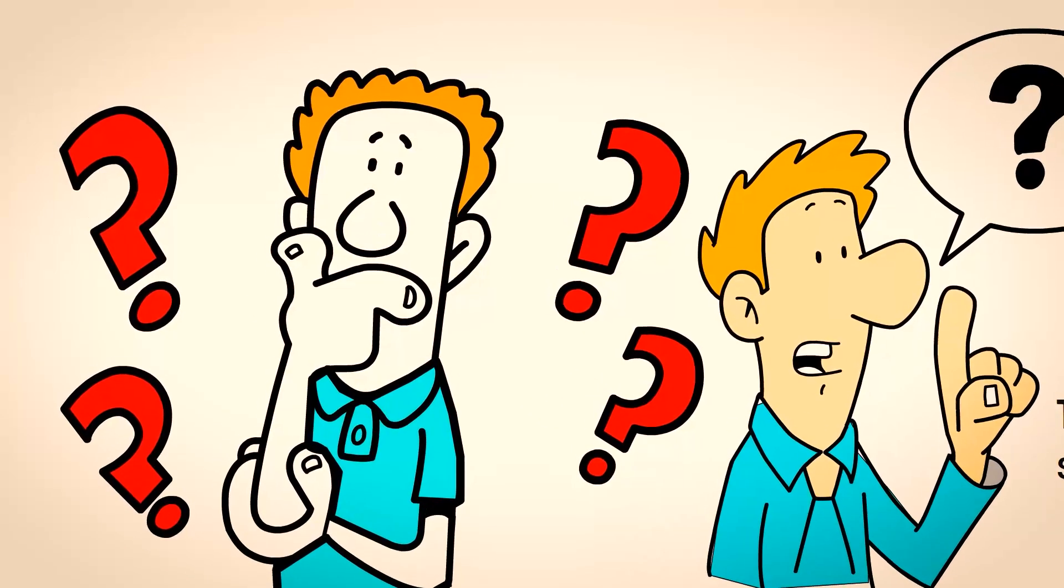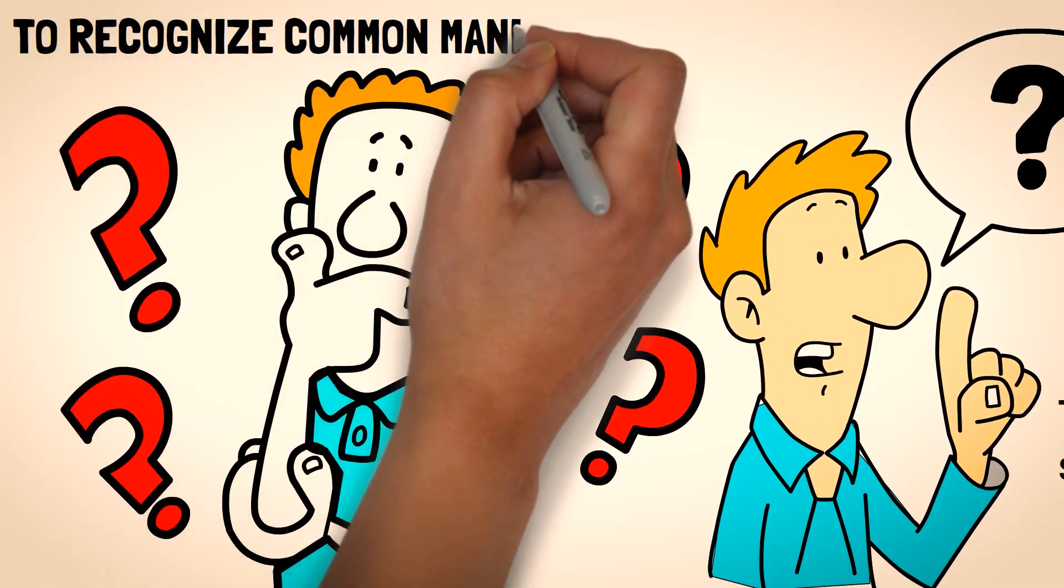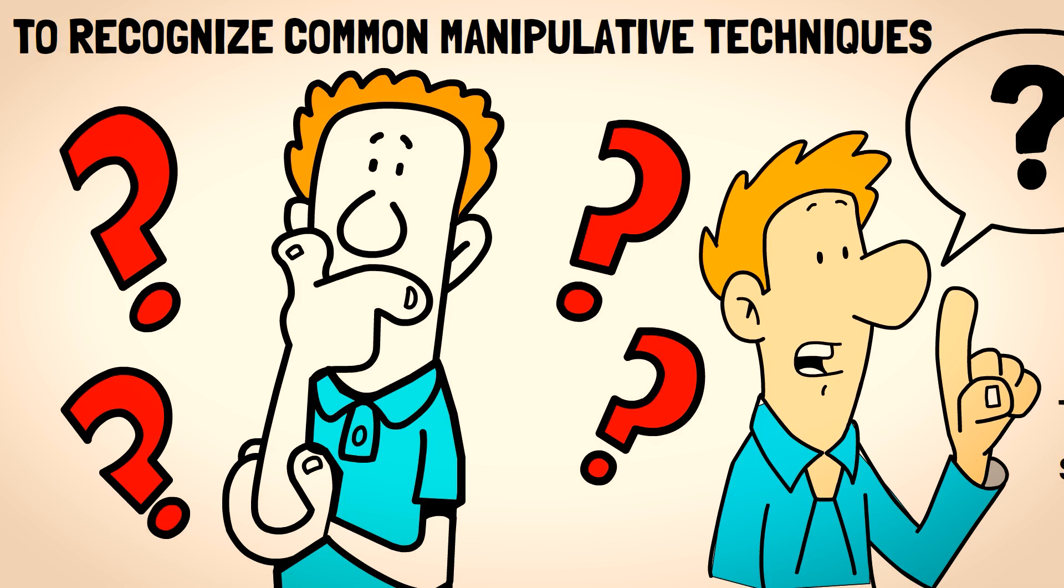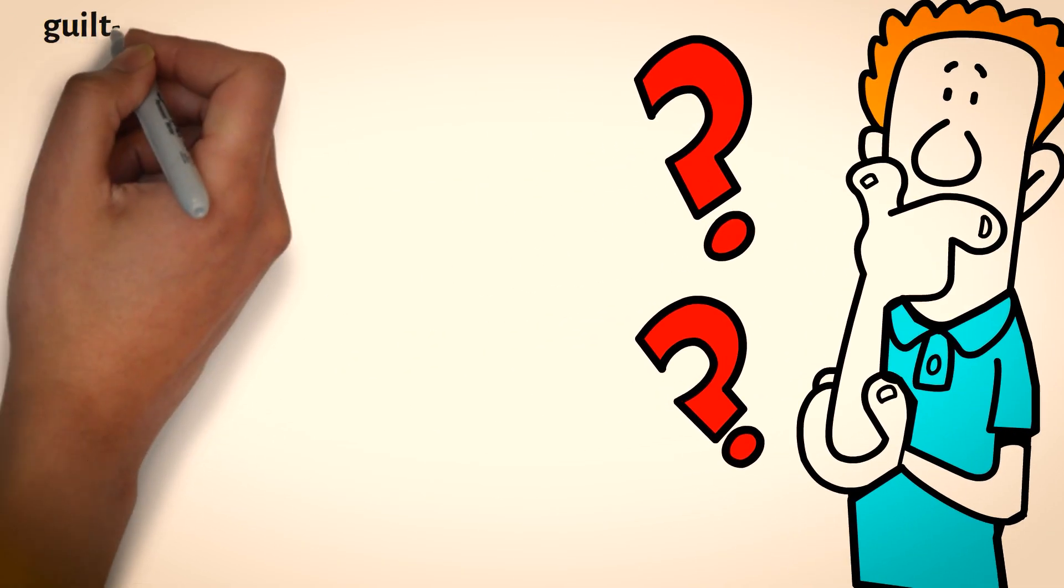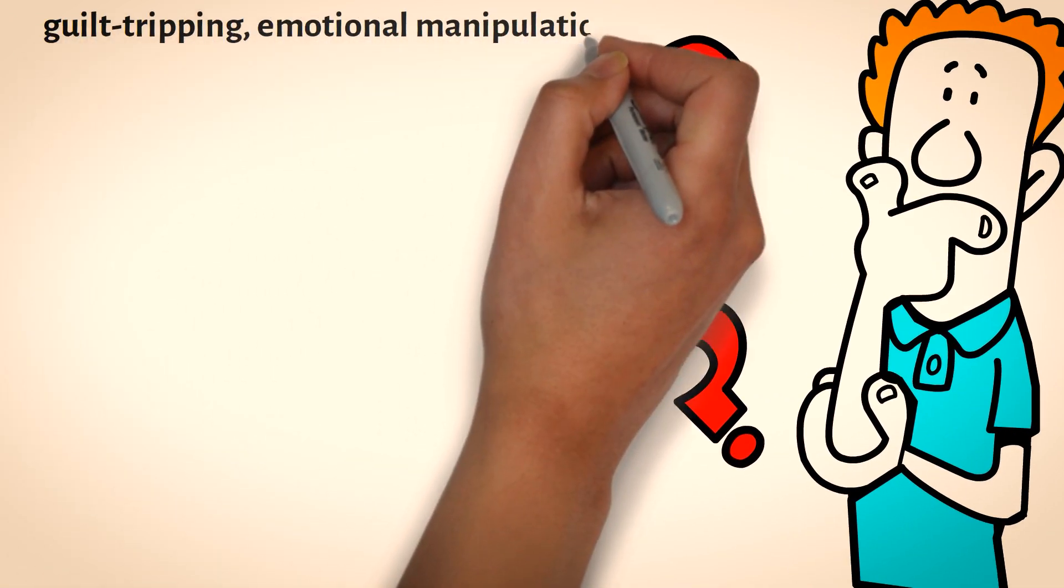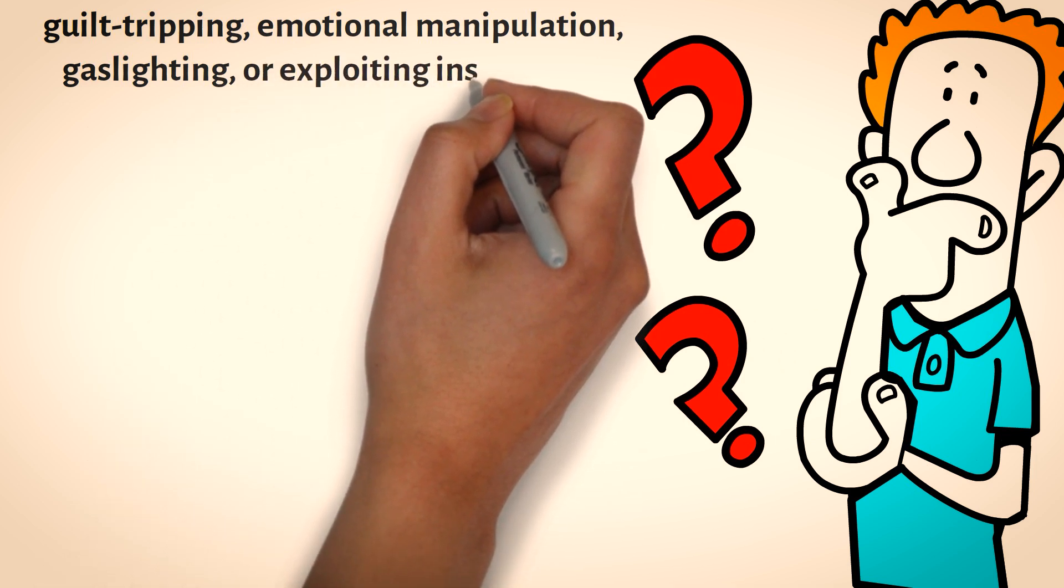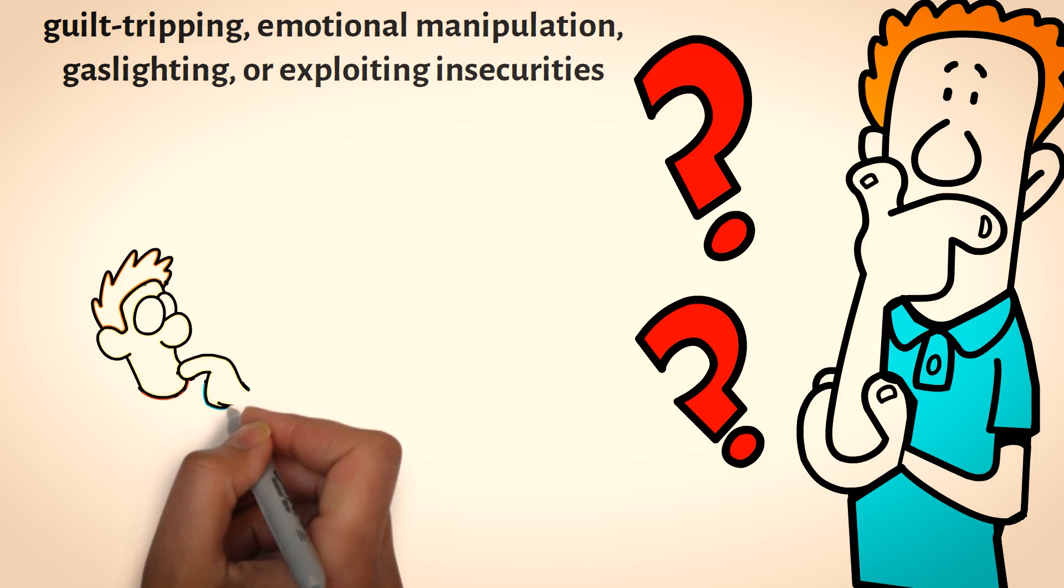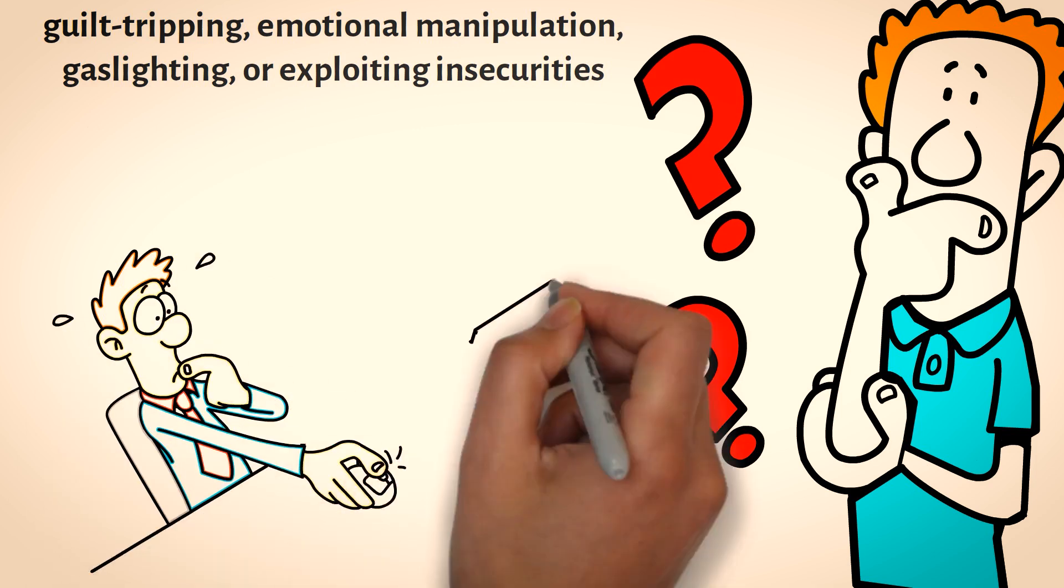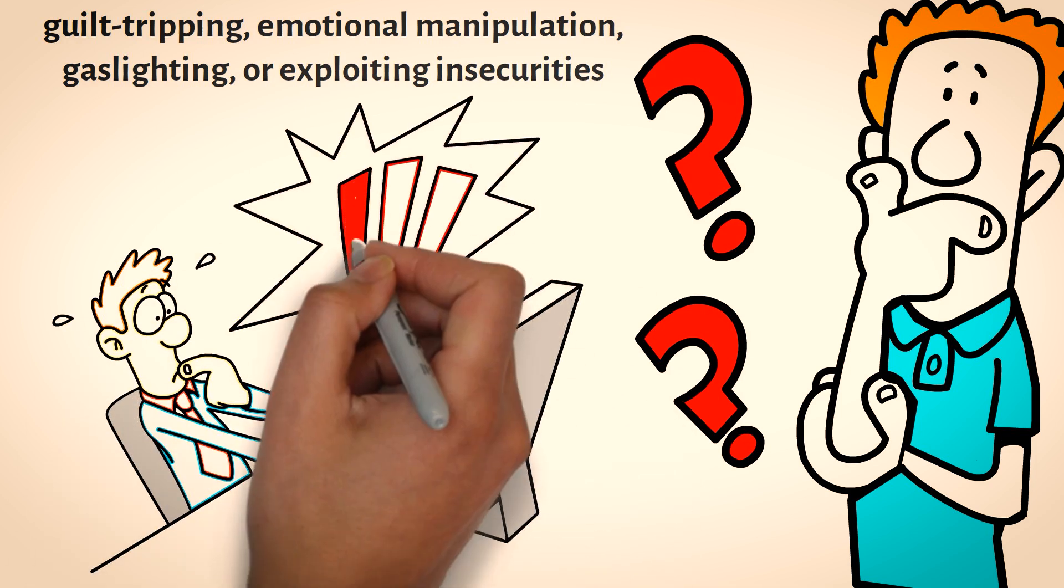Critical thinking equips sigma males with the ability to recognize common manipulative techniques. They become familiar with tactics such as guilt tripping, emotional manipulation, gaslighting, or exploiting insecurities. By being aware of these strategies, sigma males can better protect themselves from being swayed or coerced into making decisions that don't align with their values or desires.